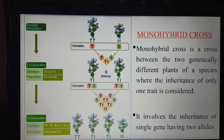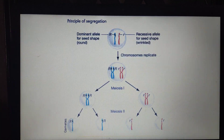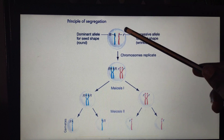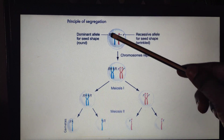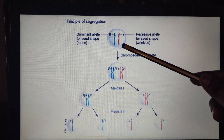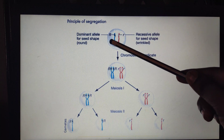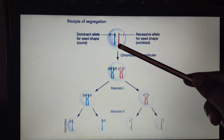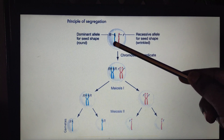Before entering into the explanation for the chart, let us discuss how the alleles are separated during gamete formation. If we understand this concept, it will be easy to study the chart. So let us enter into the concept. This is a diploid cell. Why is it a diploid cell? Because it has a chromosome from the father and the same chromosome from the mother, so it is said to be diploid.